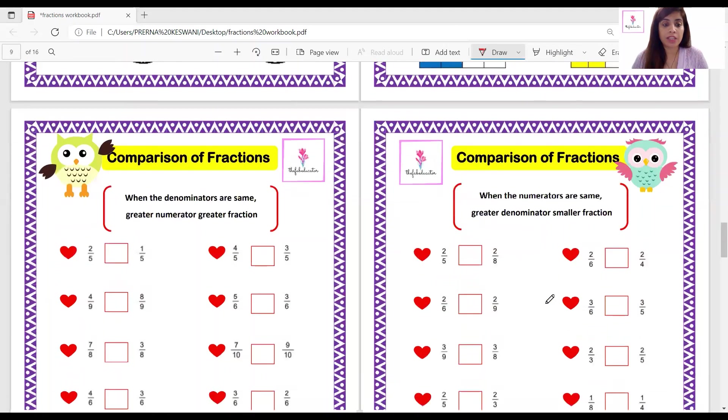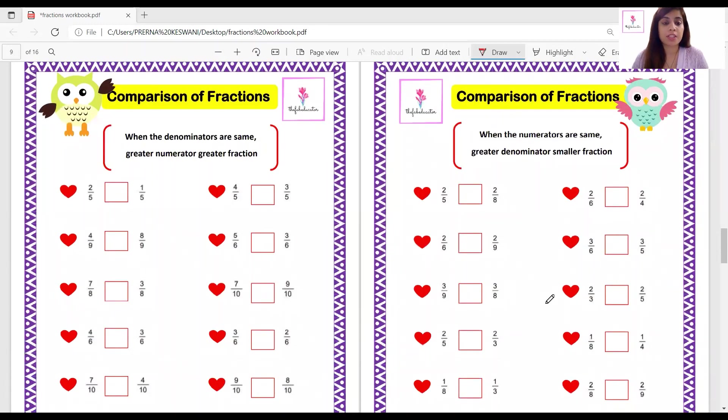After that, we start with comparison where pictures are not given, and these are divided into two categories: where the denominators are the same and where the numerators are the same.